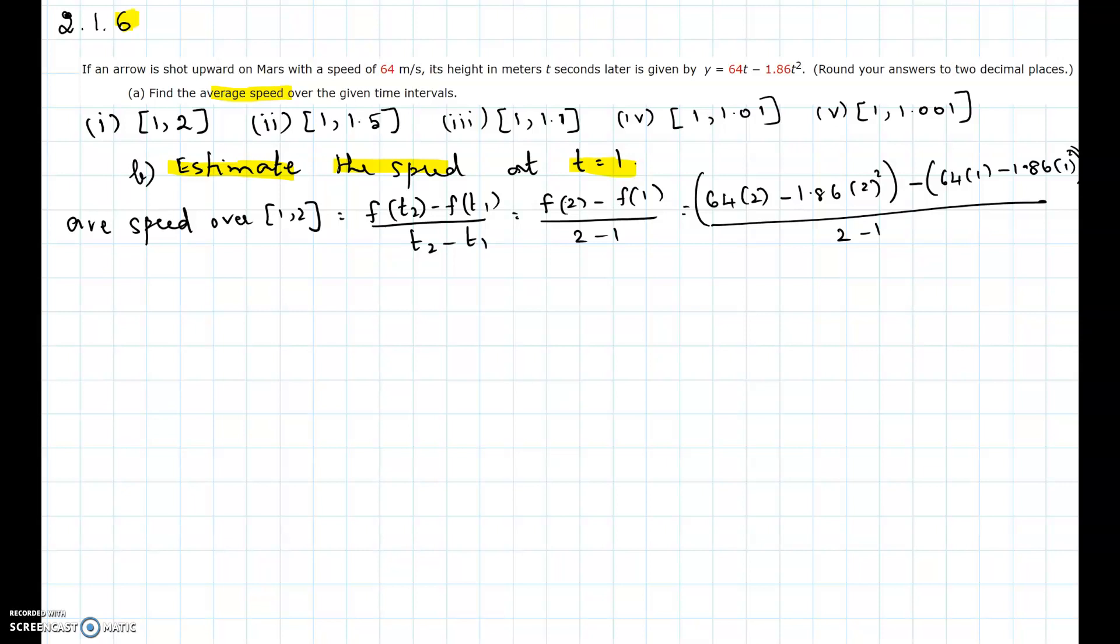The function is a function of t, so it is f at time t2 minus f at time t1 divided by the time elapsed. The function is 64t minus 1.86t squared, so you need to plug in t equals 2 and then plug in 1 in the place of t.